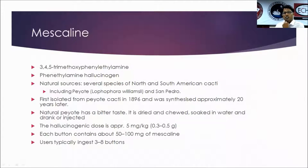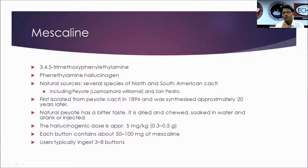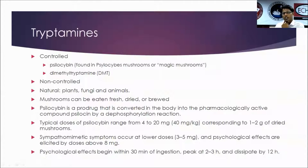Coming to mescaline — 3,4,5-trimethoxyphenylethylamine — this is a hallucinogen with natural sources. It is usually present in peyote, a plant, and San Pedro cactus, first isolated from peyote cacti. It is usually consumed in cultural events. The hallucinogenic dose is approximately 5 mg per kg, and the cacti buttons contain approximately 50 to 100 mg of mescaline, so one person consumes about 3 to 8 buttons. There were no studies related to mescaline in addiction management or psychiatric disorders.